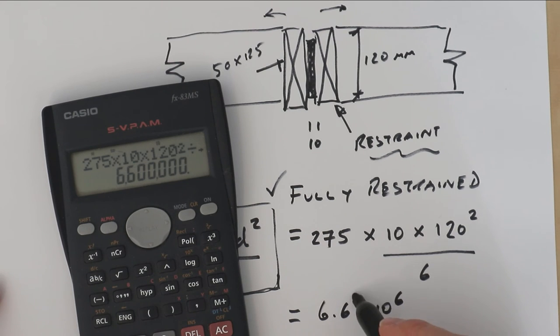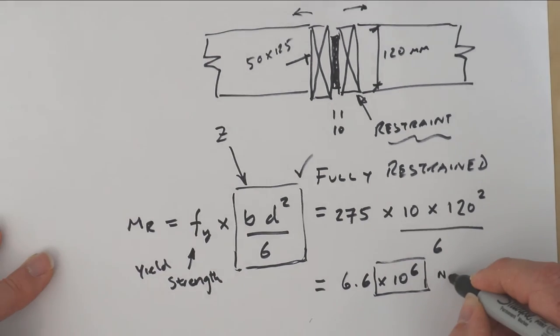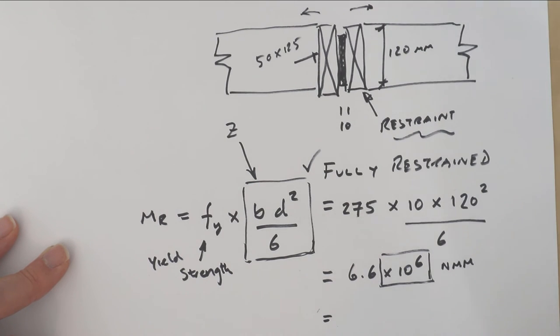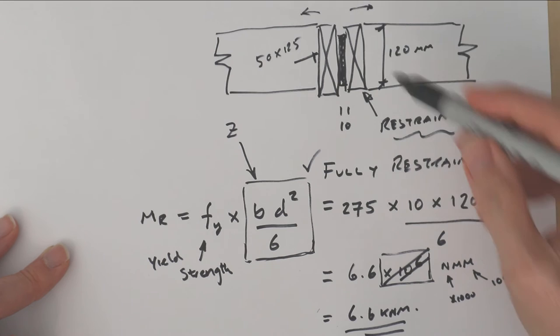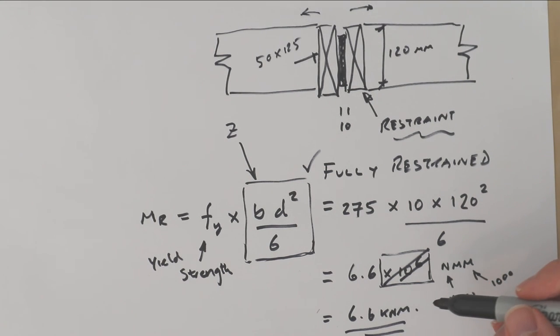That's just notation that we use in engineering and science to write essentially how many zeros are on there. 6.6, and the units are newton millimeters. Now we want to get that in kilonewton meters, so multiply by a thousand and multiply by a thousand again to change newtons into kilonewtons and millimeters into meters. So actually we've got 6.6 kilonewton meters. That's the strength of this particular flitch beam.